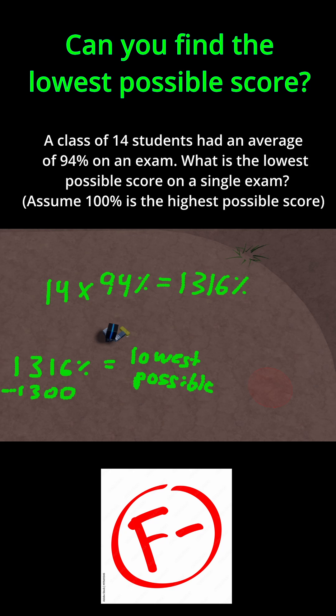If you do that, 1316 minus 1300 means that 16% is the lowest possible score that any single student could have gotten on this exam.